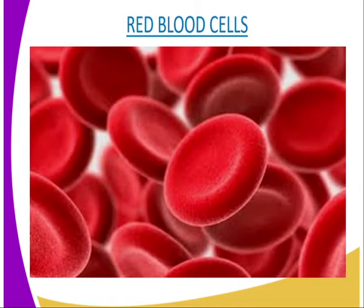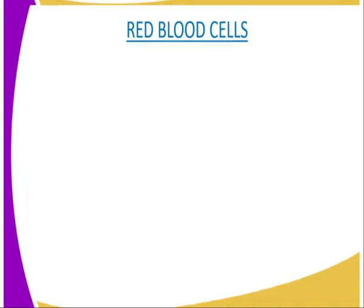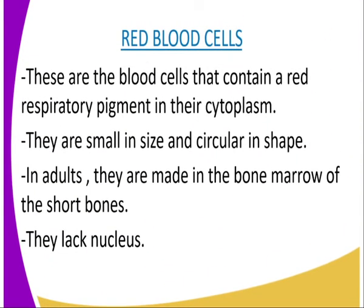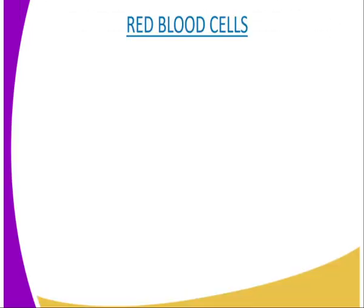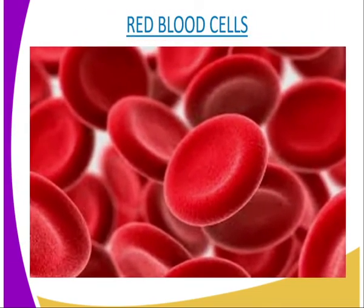They contain hemoglobin, which is a protein with iron. Hemoglobin has a high affinity for oxygen and readily combines with oxygen to form an unstable compound known as oxyhemoglobin. They also contain an enzyme carbonic anhydrase that enhances transportation of carbon dioxide. The biconcave shape of these red blood cells increases the surface area for diffusion of the respiratory gases. The biconcave shape also makes them flexible to squeeze through the narrow lumen of the capillaries. They have a lifespan of about three to four months, after which they break down and disintegrate in the liver and the spleen. The iron released from the breakdown of old red blood cells is used in the manufacture of new cells.